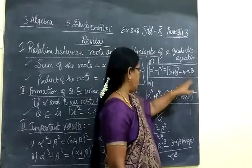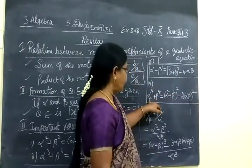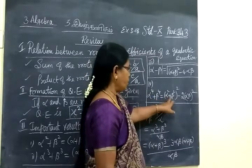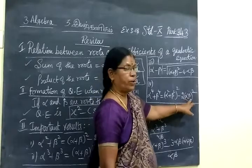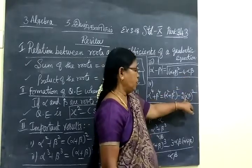You must keep this in mind. Then α⁴ + β⁴ = (α² + β²)² − 2αβ. This is the fourth power using the second power formula.